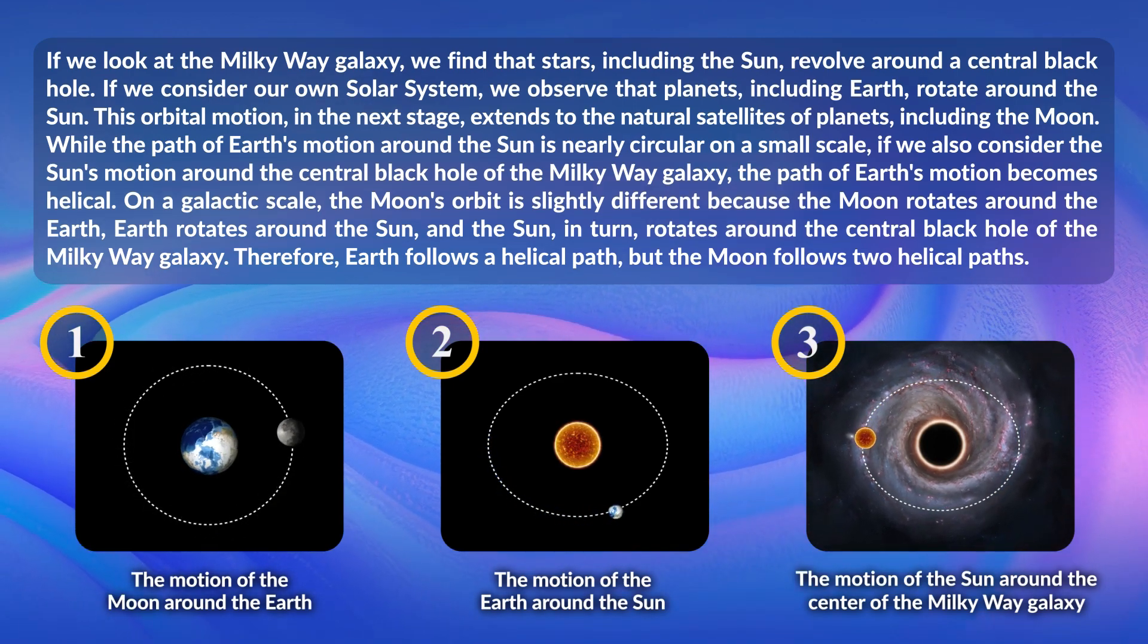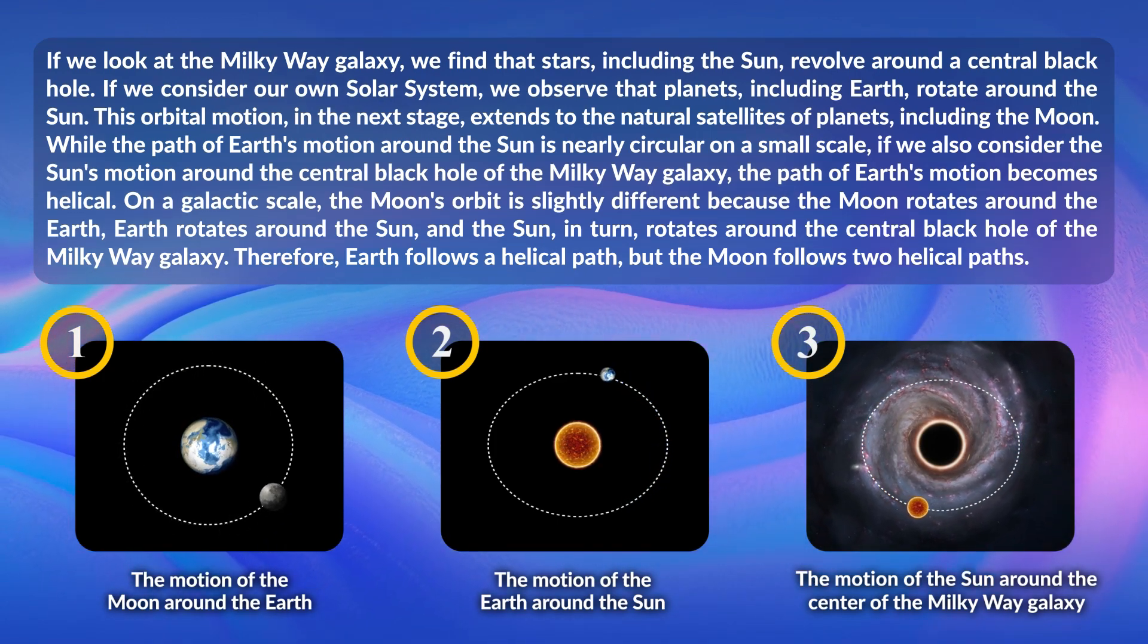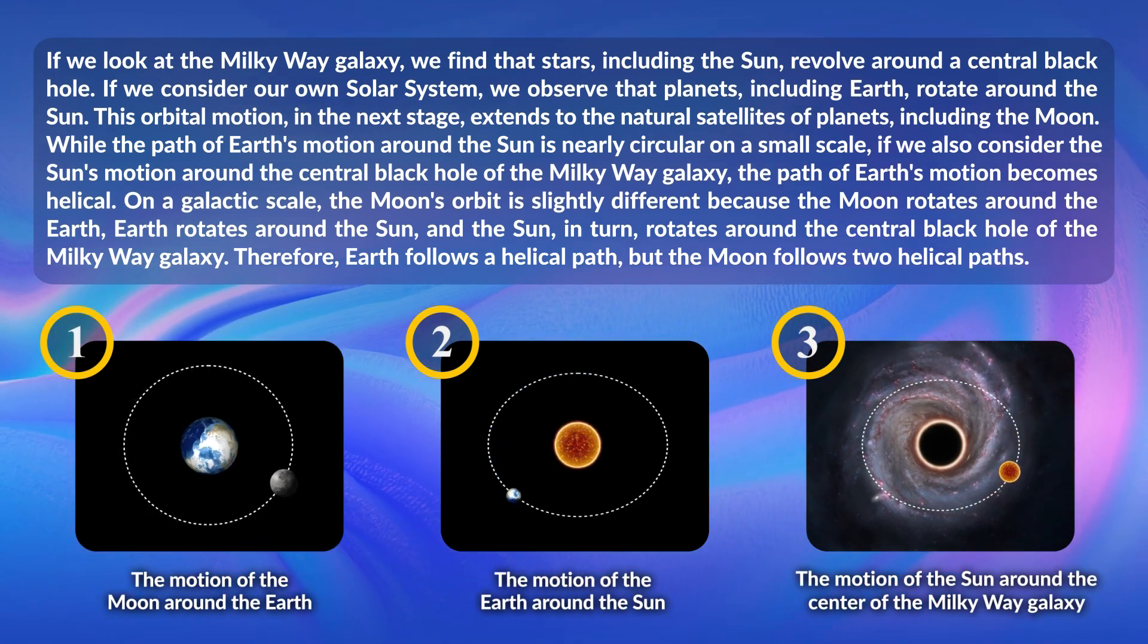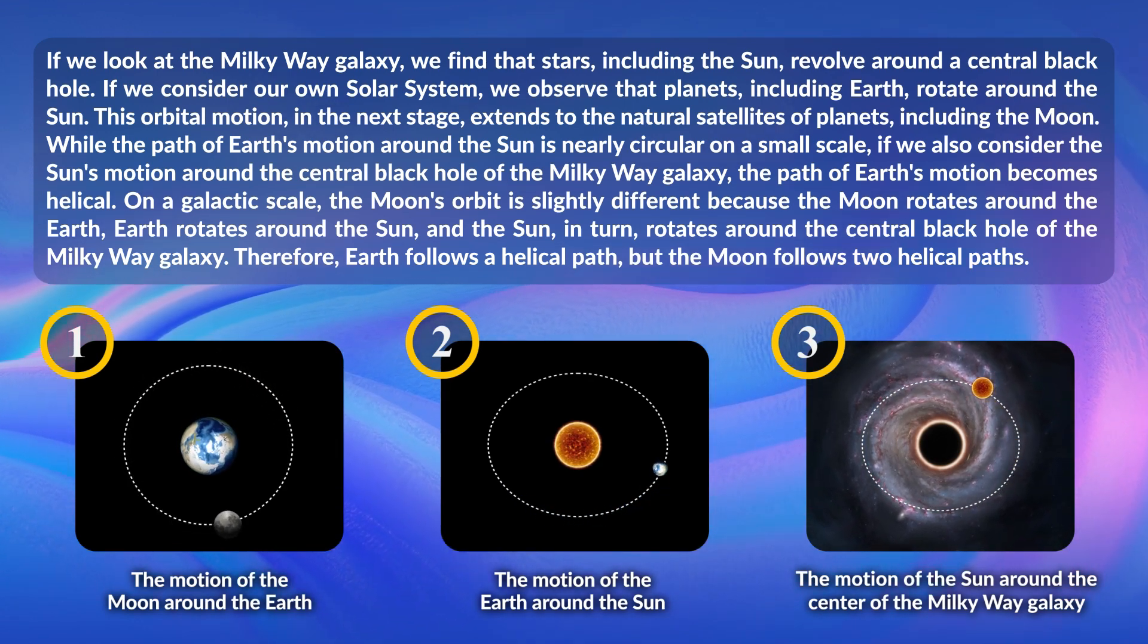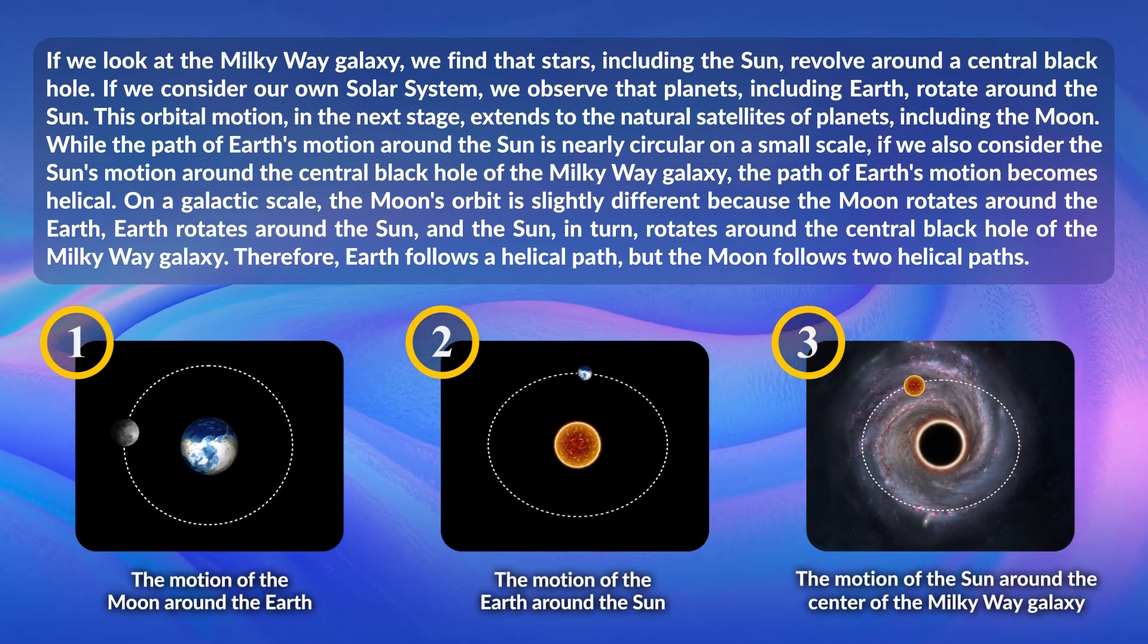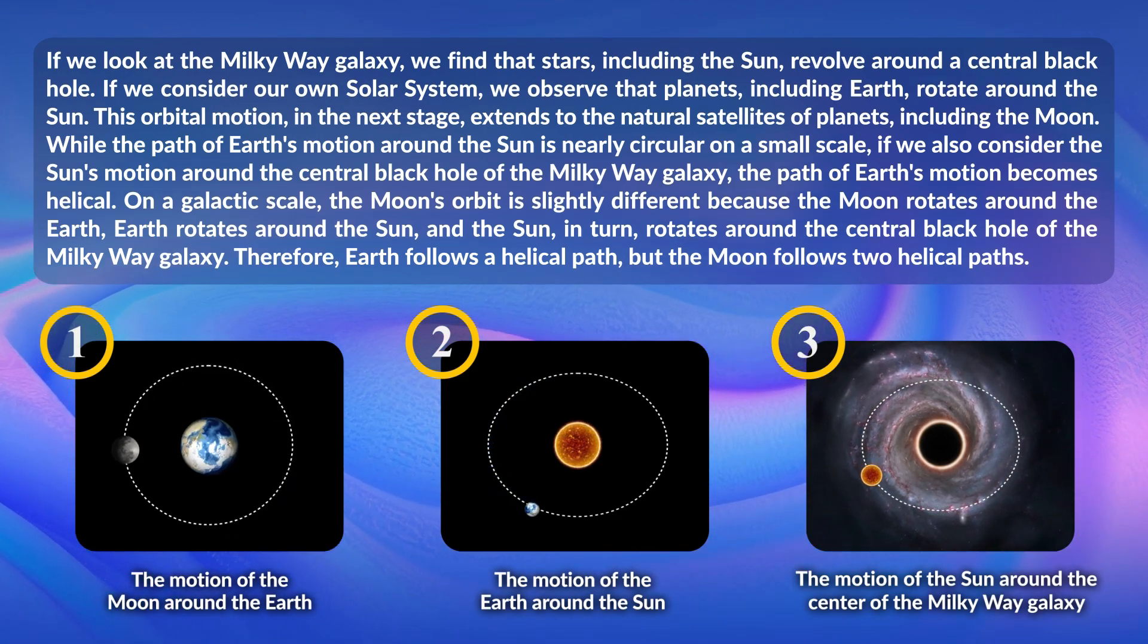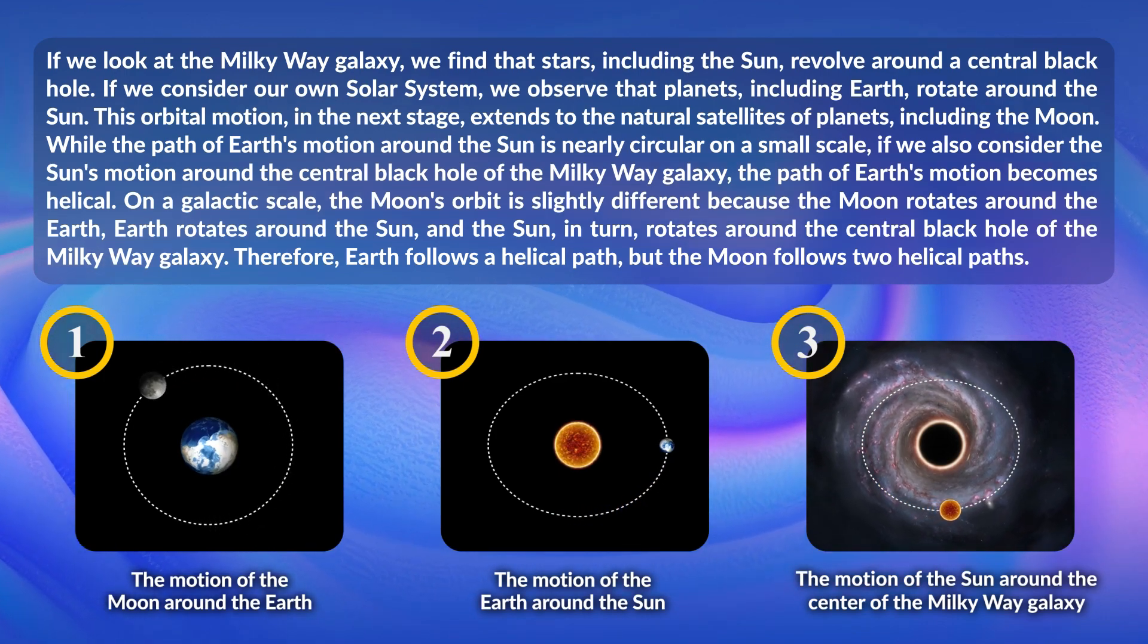While the path of Earth's motion around the Sun is nearly circular on a small scale, if we also consider the Sun's motion around the central black hole of the Milky Way galaxy, the path of Earth's motion becomes helical. On a galactic scale, the Moon's orbit is slightly different because the Moon rotates around the Earth, Earth rotates around the Sun, and the Sun in turn rotates around the central black hole of the Milky Way galaxy. Therefore, Earth follows a helical path, but the Moon follows two helical paths.